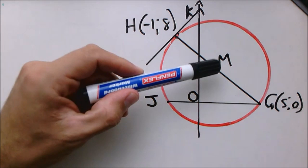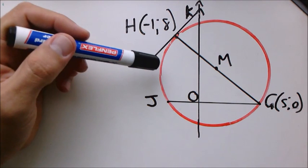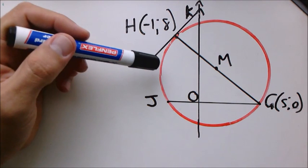In the diagram below, circle with center M, diameter GH with G at (5,0) and tangent HK with point of contact H as given coordinates.